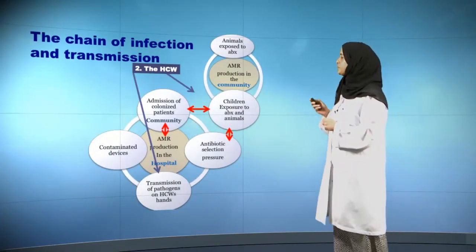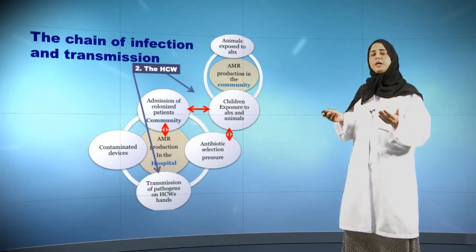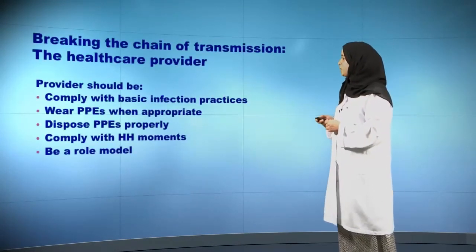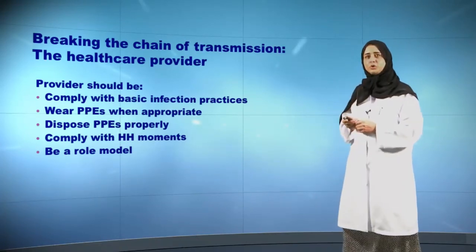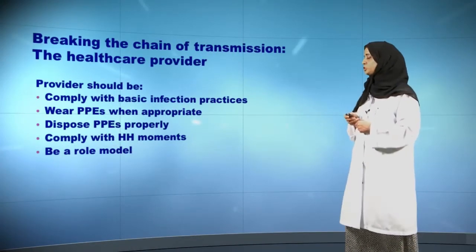The second part of breaking this chain of infection and transmission is to look at the healthcare worker — and healthcare workers go beyond the prescriber: nurses, RTs, unit assistants, anybody functioning within the healthcare setting. These people need to comply with basic infection control practices, wearing personal protective equipment (PPEs) and properly disposing of them, complying with hand hygiene moments, and being a role model in complying with infection control practices.